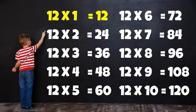Table of 12: 12×1=12, 12×2=24, 12×3=36, 12×4=48, 12×5=60, 12×6=72, 12×7=84, 12×8=96, 12×9=108, 12×10=120.